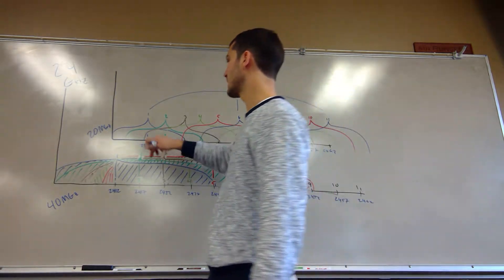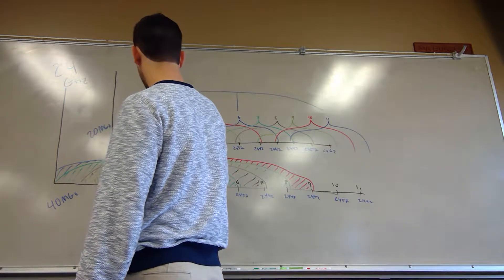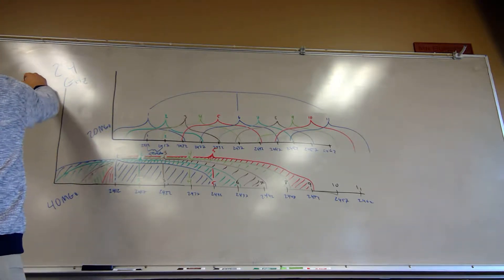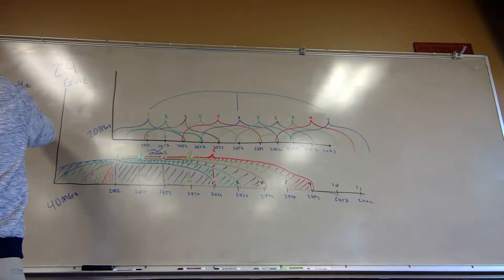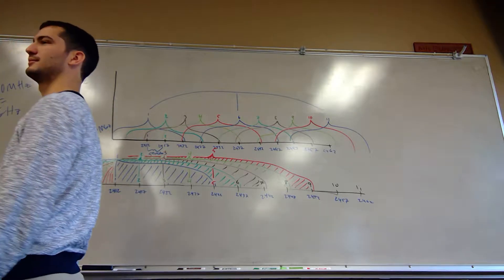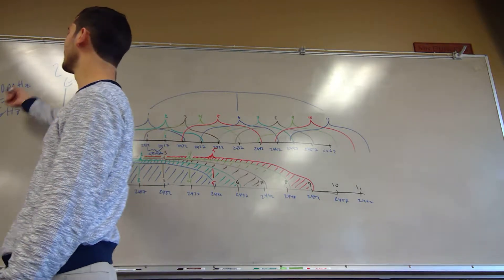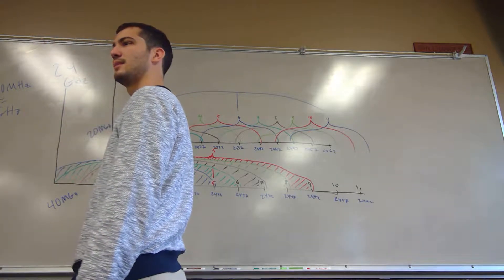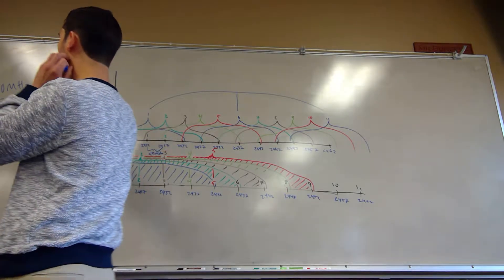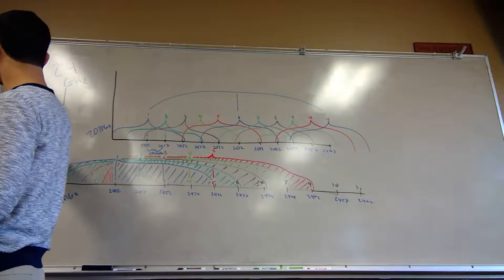The difference between 2.412 and 2.417 is 5 megahertz. A thousand megahertz equals one gigahertz, and a million hertz equals one megahertz — just like gigabytes, megabytes, kilobytes, etc.